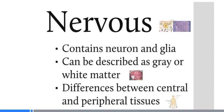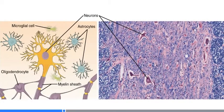I want to deal with these three things individually. Nervous tissue is made up of two main cell types: there are neurons and there are glia. Glia come in various types — in this picture we see astrocytes, oligodendrocytes, and microglia. There are other types found here and there.